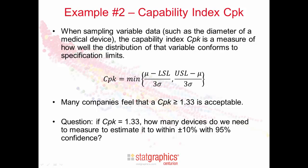A question I'd like to pose now is, let's suppose that CPK is 1.33. How many devices do we need to measure to estimate that capability index to within plus and minus 10% with 95% confidence?